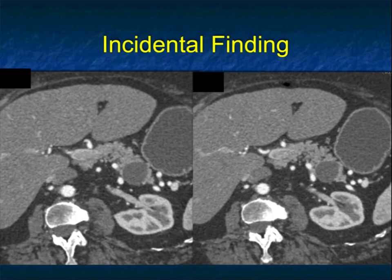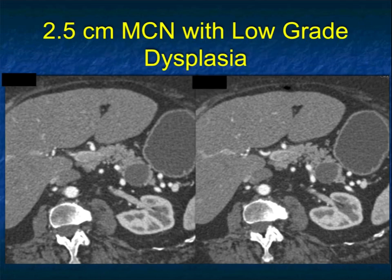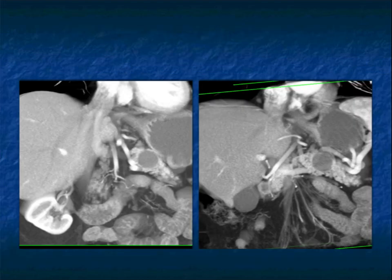Look at the appearance. Now, some patients have symptoms — vague abdominal pain. Other patients, like this one, are incidental findings. This is the one I'm thinking about: an IPMN, but I don't see a pancreatic duct. So the location makes me mention MCN in the differential diagnosis. This was a 2.5 cm MCN with low-grade dysplasia.